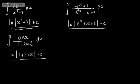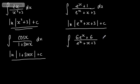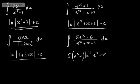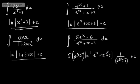Now let's say it wasn't as obvious — suppose we had 6(e to the x plus 1) over (e to the x plus x plus 3). You might not spot this straight away, but we could write 6 times (e to the x plus 1) multiplied by the natural log of the modulus of (e to the x plus x plus 3), divided by the derivative of the inside function, which is (e to the x plus 1). Those values cancel, giving us 6 times the natural log of the modulus of (e to the x plus x plus 3) plus a constant.